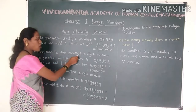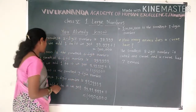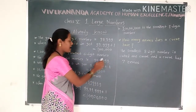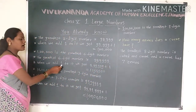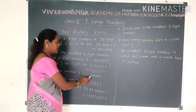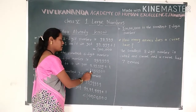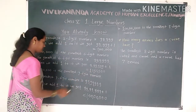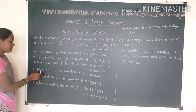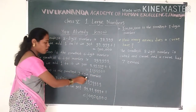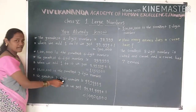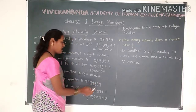The greatest 6-digit number is 6 times 9, which is 9,99,999. When we add 1 to it, we get 10,00,000 — that is 1 followed by 6 zeros, which is the smallest 7-digit number.